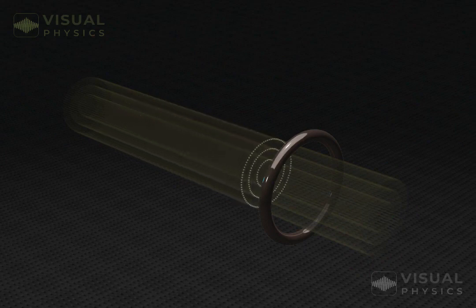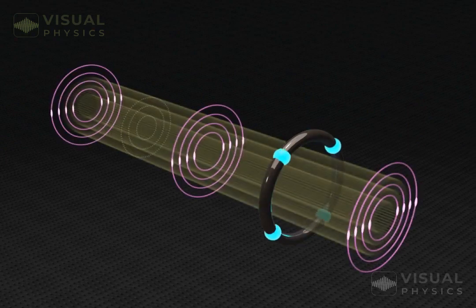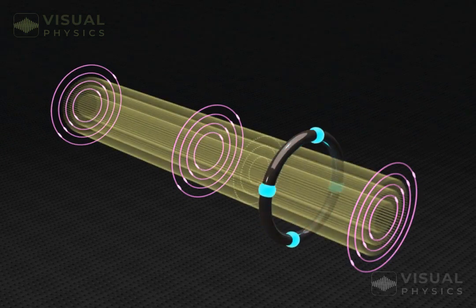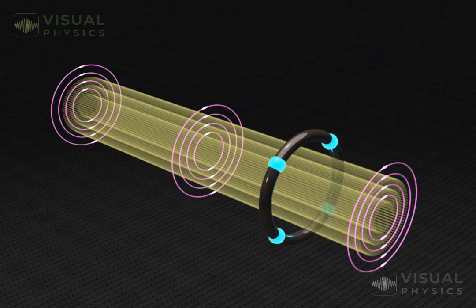If we place a conducting coil in a changing magnetic field, then because of the induced electric field, charges in the coil experience an electric force, and thus a current is established in the coil.